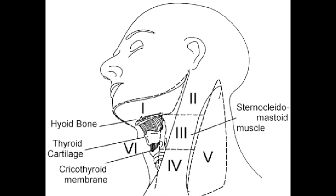Lymph nodes are located throughout the neck, but for treatment purposes, the neck can be divided into different lymph node levels. Level 1 refers to the lymph nodes located underneath the chin and the lymph nodes that surround the submandibular salivary glands beneath the jaw. Levels 2, 3, and 4 contain the lymph nodes located next to the jugular vein as it runs down the length of the neck beneath the sternocleidomastoid muscle, extending from approximately the level of the mandible down to the level of the clavicle. Level 5 contains the lymph nodes located behind the sternocleidomastoid muscle but in front of the trapezius muscle. Level 6 contains the lymph nodes in the central portion of the neck adjacent to the trachea, and level 7 contains the lymph nodes located in the mediastinum.